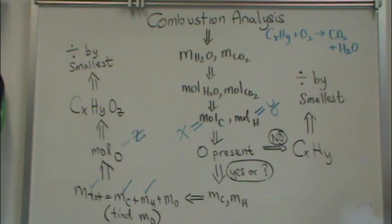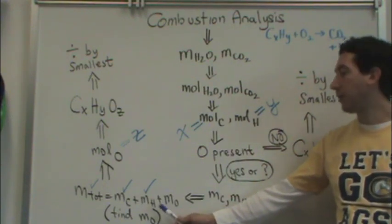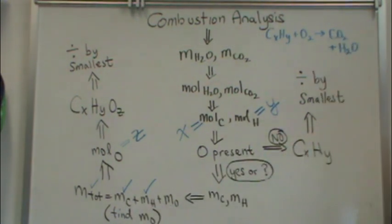You're just getting insignificant figures, basically, out of calculation error. So if you get a number basically near zero or much, much smaller than the mass of carbon and hydrogen, really there's no oxygen.